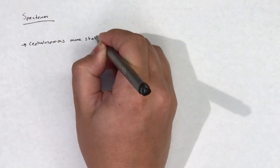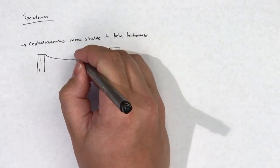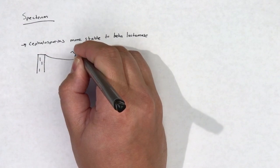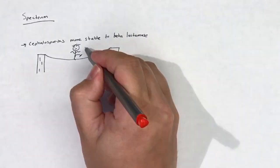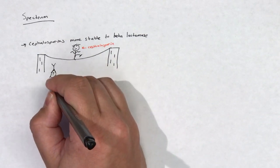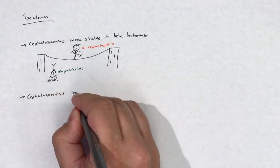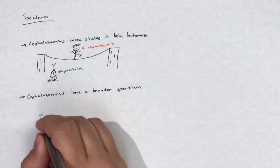Cephalosporins are more stable to beta-lactamases versus penicillins, and cephalosporins tend to have a broader spectrum of activity versus penicillins. Cephalosporins are grouped into generations that tend to have similar bacterial coverages. These individual spectrums of activity will be covered in the individual cephalosporin generation videos.